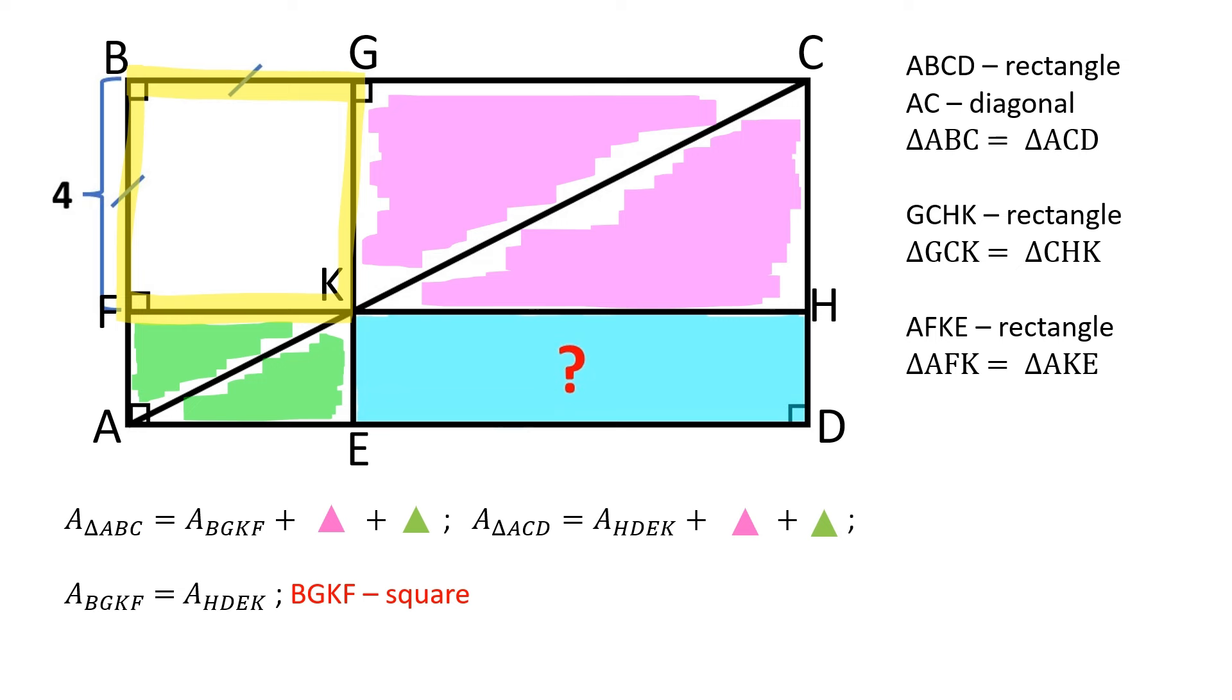BGKF is a square. The area of the square is equal to 16 square units. Therefore, the area of the blue rectangle is equal to 16 square units.